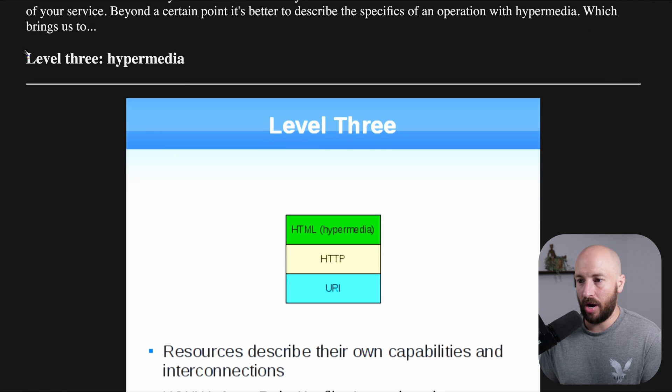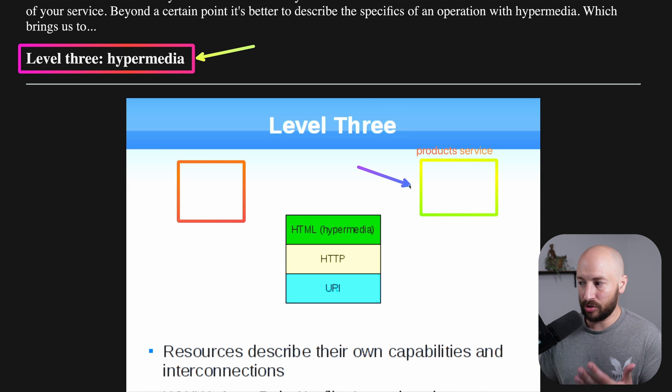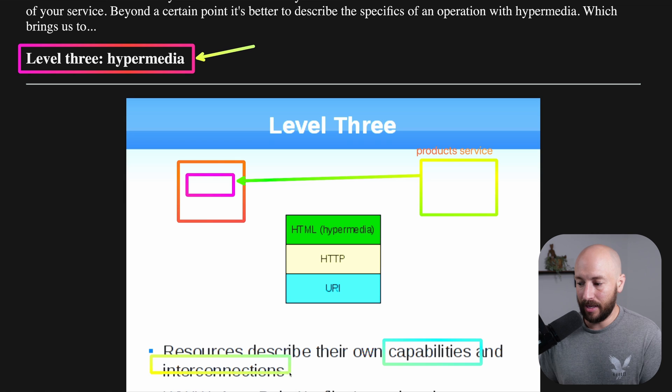Lastly, we have the god tier of REST APIs, which is the hypermedia or supporting hypermedia in your API. The product service, alongside having multiple URIs and multiple HTTP methods per URI for the actions that we want to take, in the response, the resource that is fetched also describes its own capabilities and interconnections.